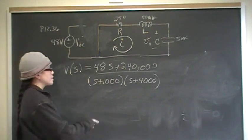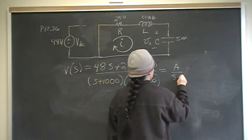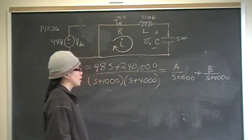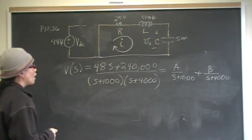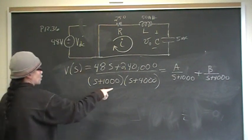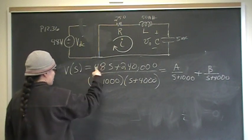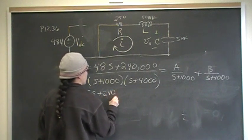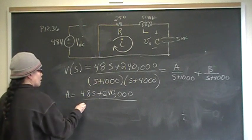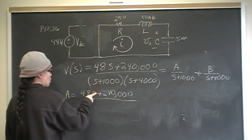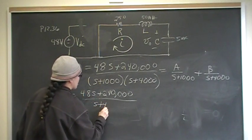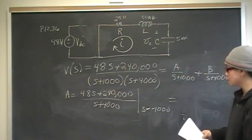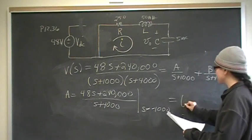Partial fraction expansion lets us rewrite this as A/(s + 1,000) plus B/(s + 4,000). To find A, multiply both sides by (s + 1,000), which cancels that denominator, leaving (48s + 240,000)/(s + 4,000) plus B·(s + 1,000)/(s + 4,000). Setting s = −1,000 makes the B term vanish, and evaluating gives A = 64.